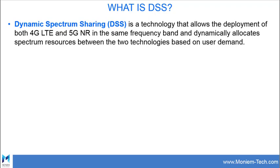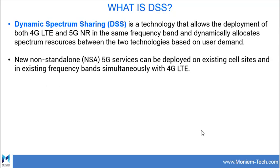With NSA, or Non-Standalone 5G service, 5G can be deployed on existing cell sites and in existing frequency bands simultaneously with 4G or LTE. So with DSS, an operator doesn't have to split their mid-band spectrum or dedicate spectrum exclusively to either 4G or 5G.